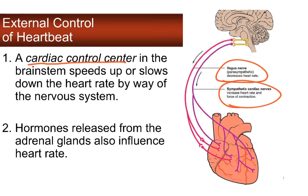Most of us have experienced when you get a sudden shock and a jolt of adrenaline — that's a hormone released from the adrenal glands that leads to a rapid increase in heart rate. So both hormones from the endocrine system and the nervous system influence heart rate.